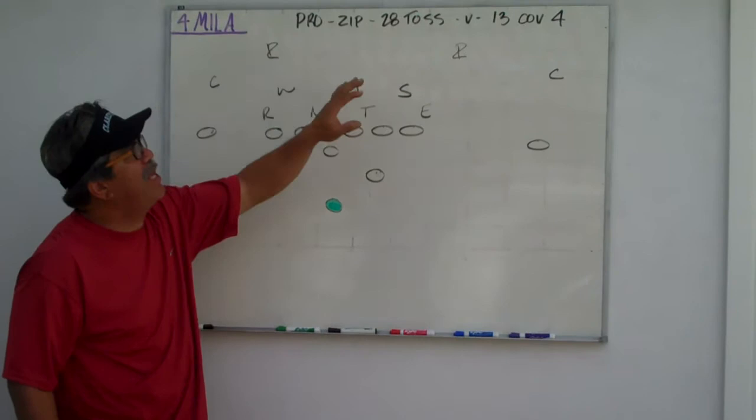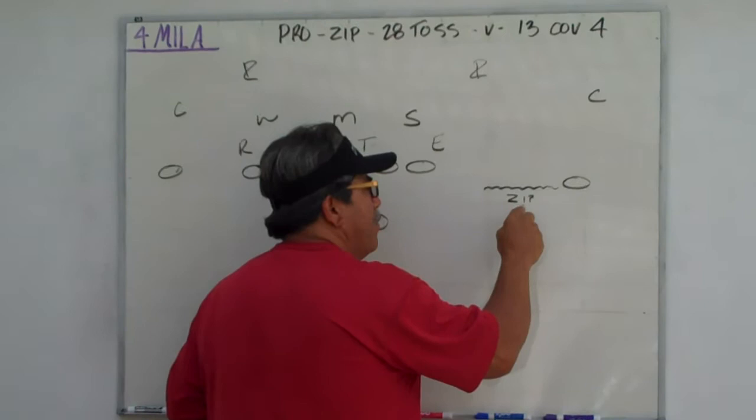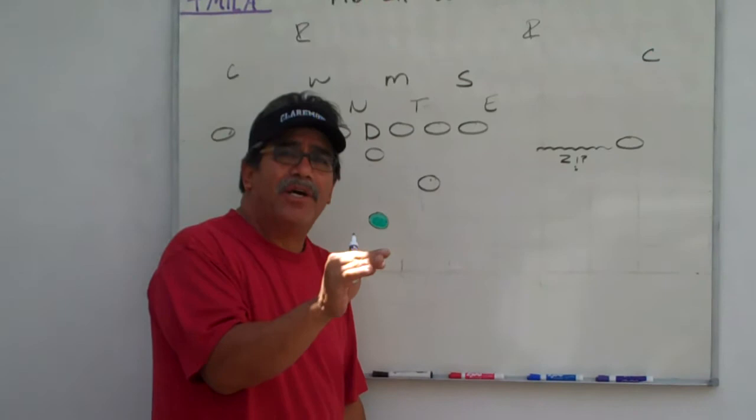We're going to go pro zip 28 toss versus a 13 cover four. The zip is important for us because what it does, off of the zip, that I letter, I in the zip says we're going to go into the formation.